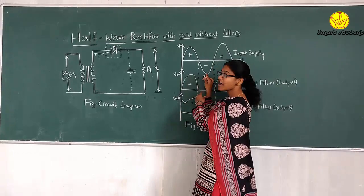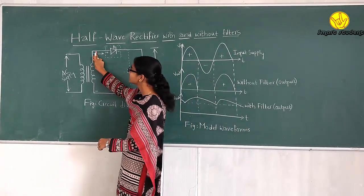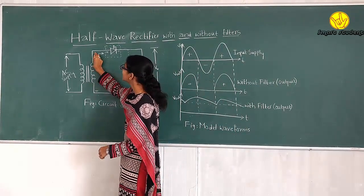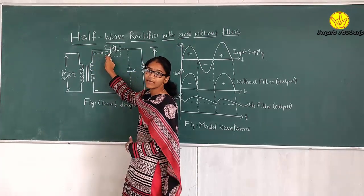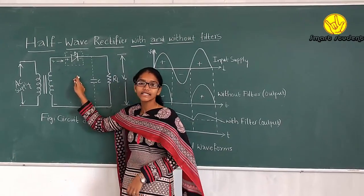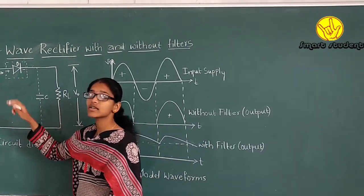When coming to the negative half cycle, the transformer is negative. Negative voltage is induced and now the diode acts in the reverse bias condition. In reverse bias condition, diode acts as an open switch.